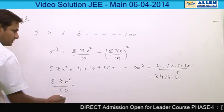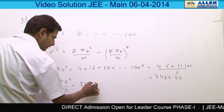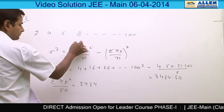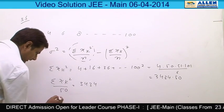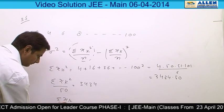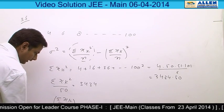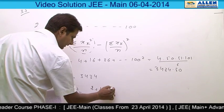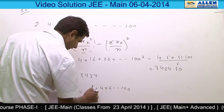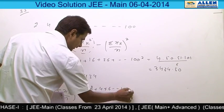Now to find its average, sigma x_k square upon 50, which is 3434. This is our first part. Now to find sigma x_k upon n whole square: this becomes 2 plus 4 plus 6 and so on up to 100, whole divided by 50, whole square.